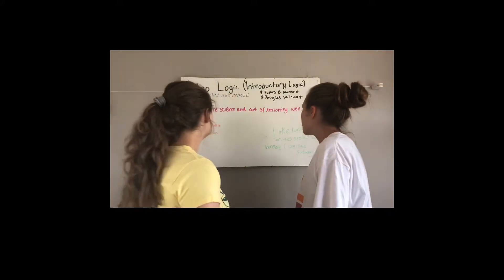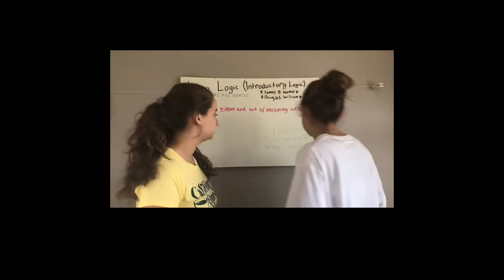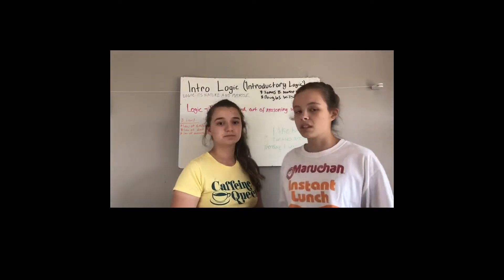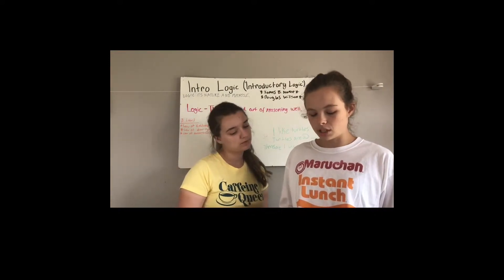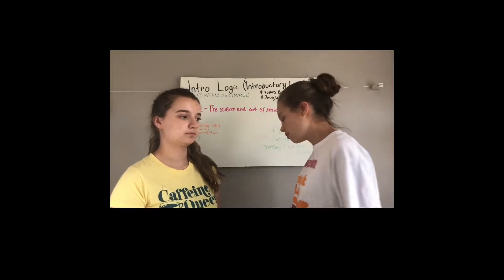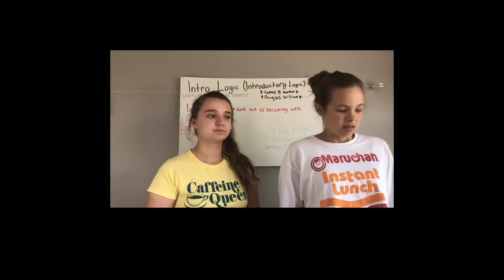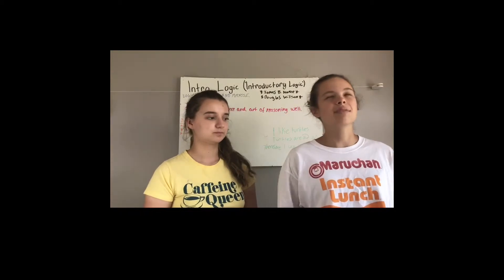Now we're going to talk about formal and informal logic. Formal logic deals with proper modes of reasoning — how to reason properly. Informal logic deals with operations of thinking that are indirectly related to reasoning. We don't really cover informal logic in this book, but informal logic is more about things not directly tied to drawing conclusions from proper information.